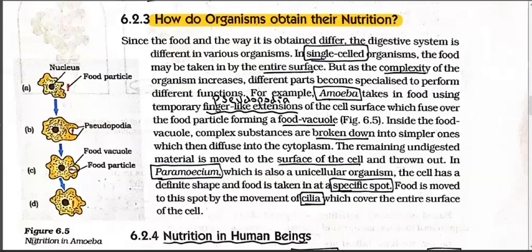Very important short note of this chapter - Nutrition in Amoeba. Amoeba is a shapeless, single-celled organism. Since the food and the way it is obtained differs, the digestive system is different in various organisms. In single-celled organisms like Amoeba, the food may be taken in by the entire surface. We saw earlier with diffusion - this organism takes food through its own body surface; it has no specialized organs.